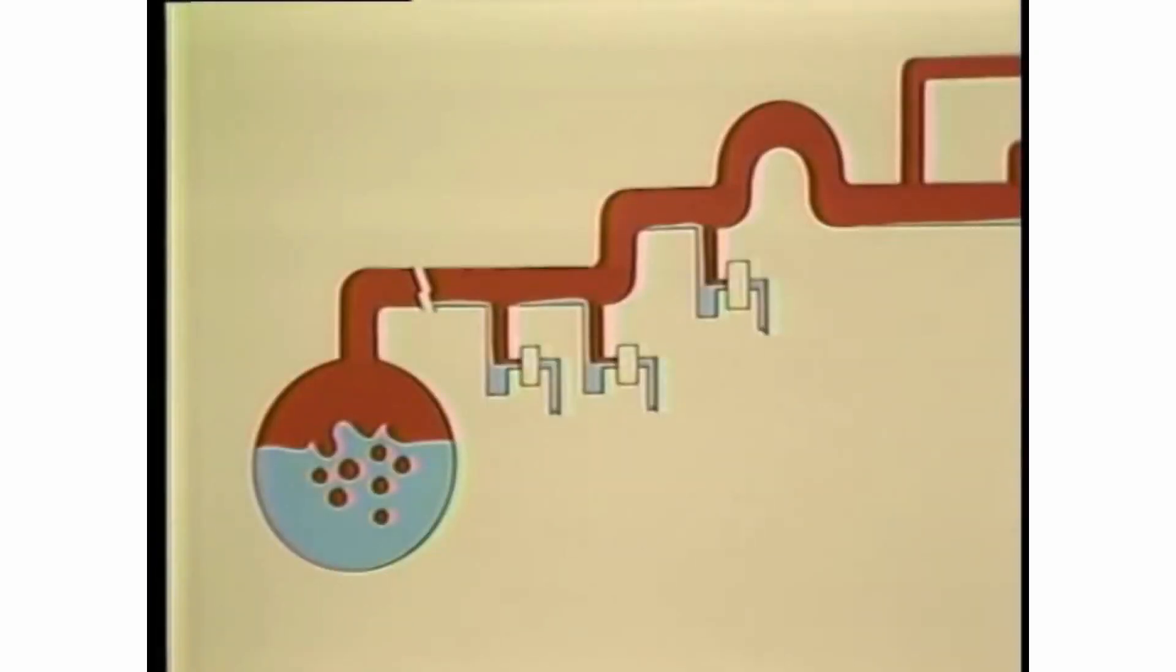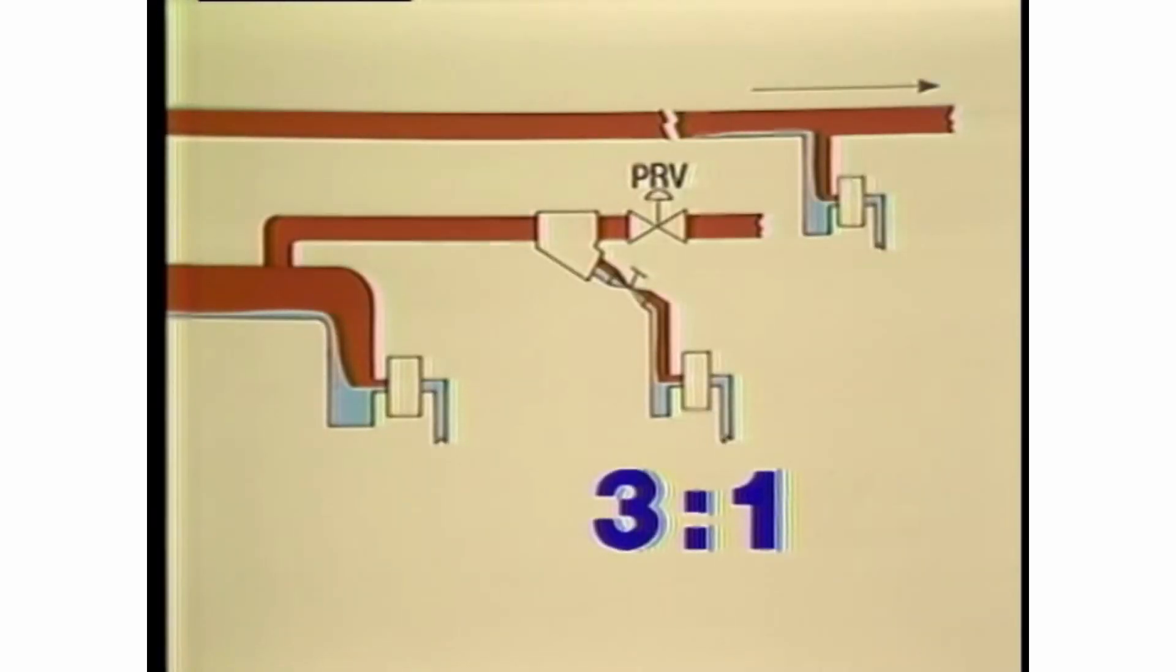Use a 2 to 1 safety factor for drip traps between the boiler and the end of the main. Use a 3 to 1 safety factor for the trap at the end of the main, and for traps ahead of shut off valves, pressure reducing valves, and temperature control valves.